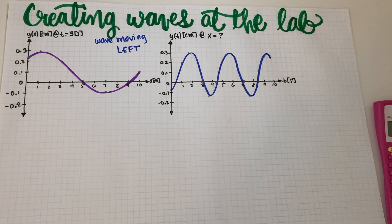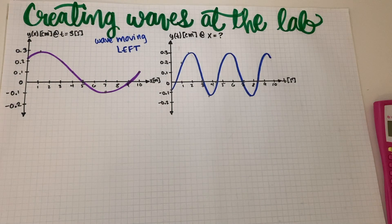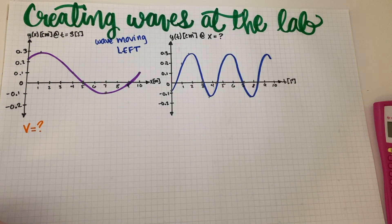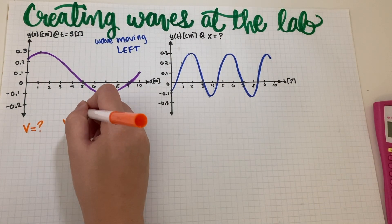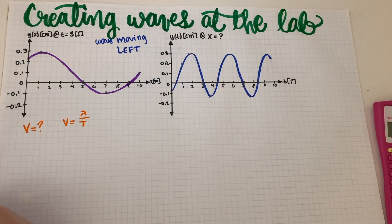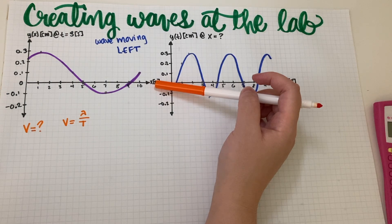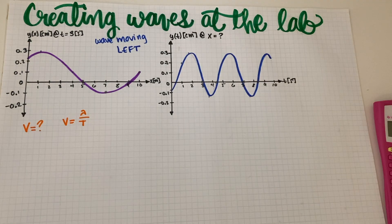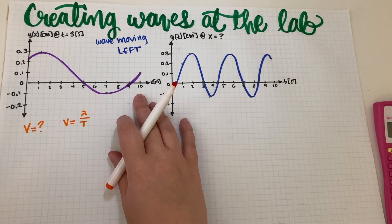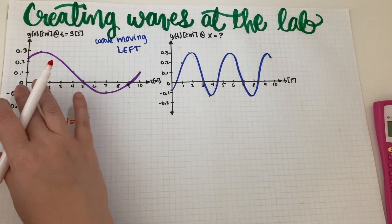I made a little drawing of the graphs we're going to be working with — I recreated them as best I could. So let's get started. The first thing they want from us is the velocity: how fast is the wave traveling? We know from our auxiliary equations that velocity equals lambda divided by T, so basically we just have to find lambda and T.